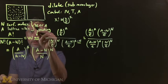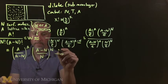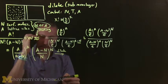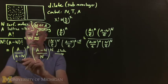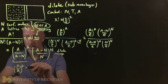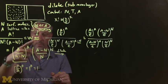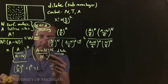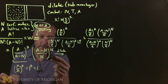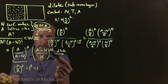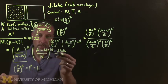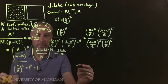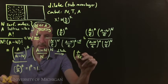Now we use the dilute approximation. A giant number divided by a giant number minus a tiny little number is essentially the giant number divided by itself — so [A/(A−N)]^A looks like (A/A)^A = 1^A = 1. This term goes away completely. For the second term, A−N is just approximately A, so we can write A/N − N/N = A/N − 1, and since A/N is enormous, no one's going to miss the 1. Either way, this ends up being (A/N)^N.